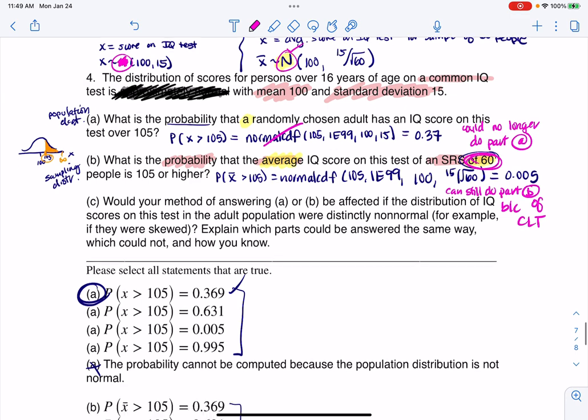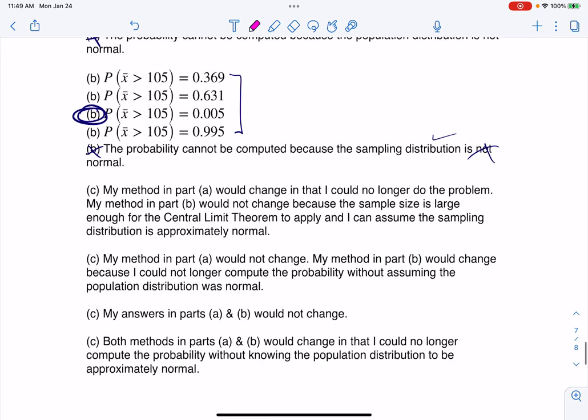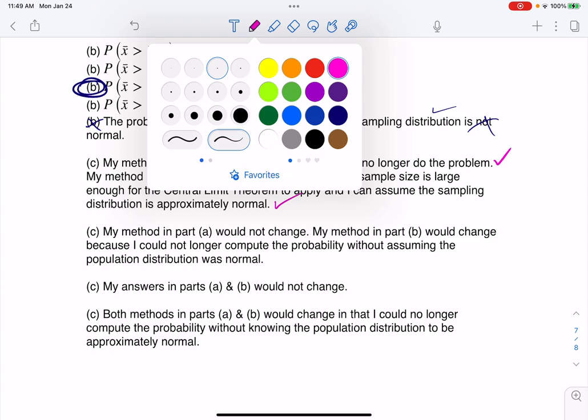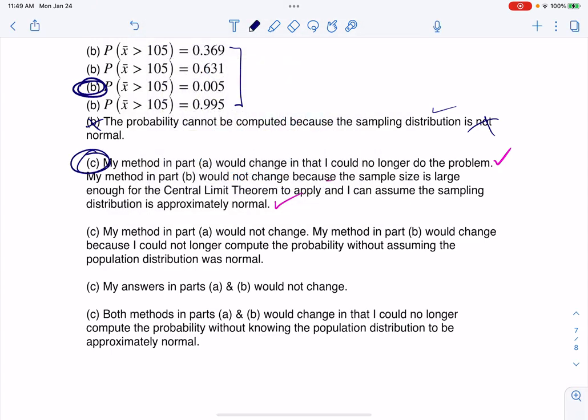So let's go through here and see which option this is looking for. So my method in part A would change in that I can no longer do the problem. That's correct. My method in part B would not change because the sample size is large enough for the CLT. That's correct. So that's going to be the correct answer.